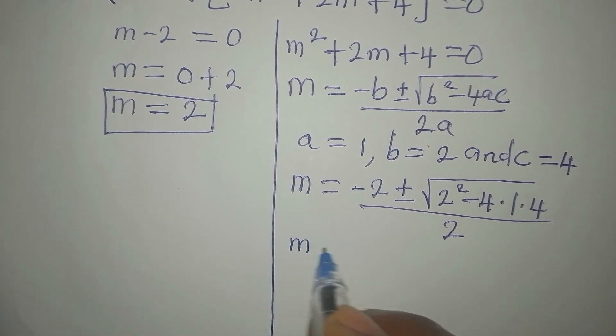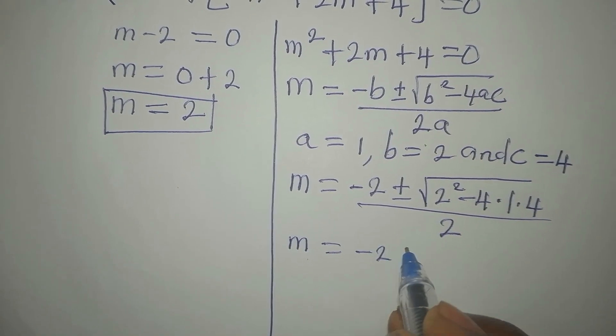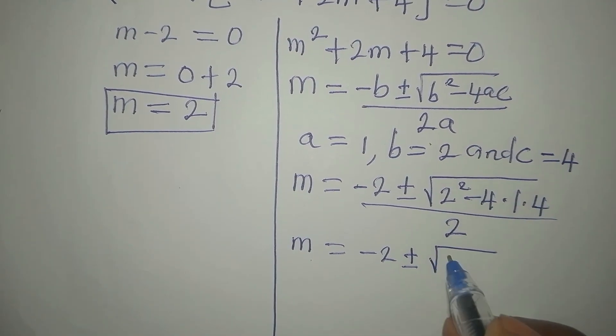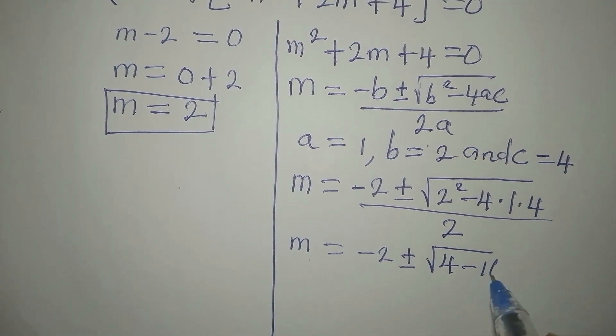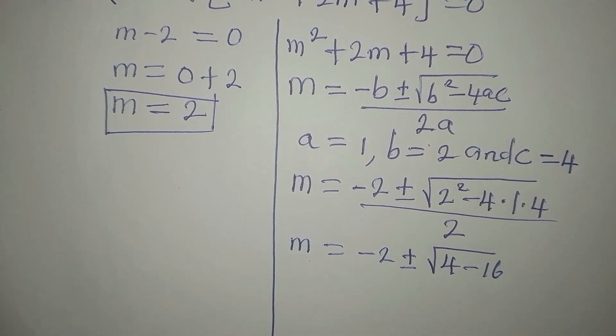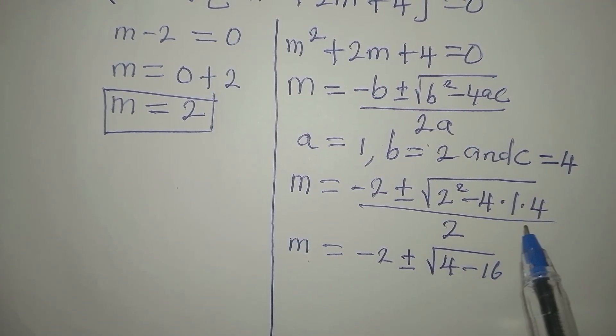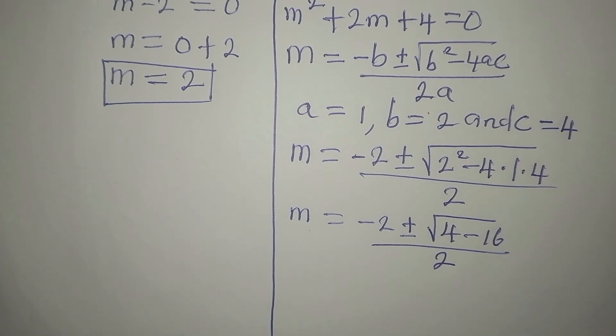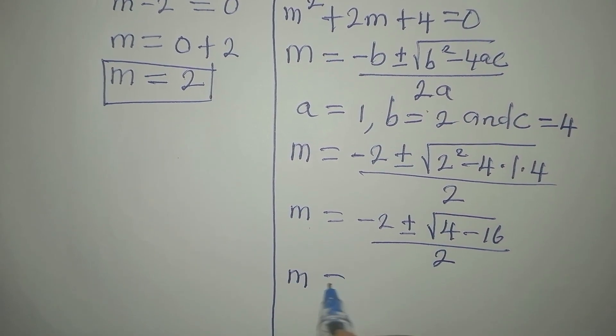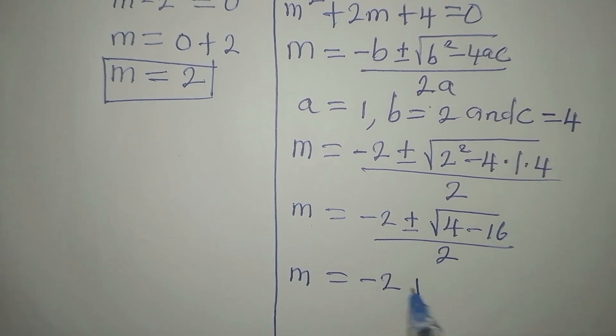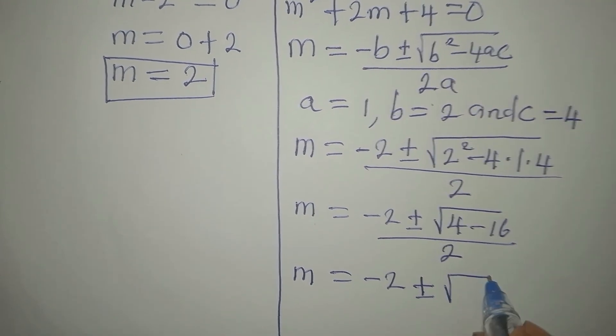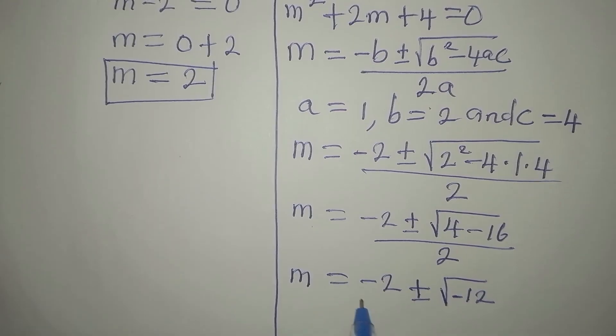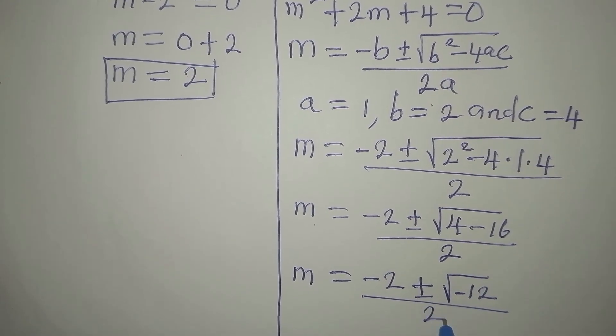So that our m will now be minus 2, plus or minus, square root of 4 minus 16. Because 2 squared is 4, 4 times 1 times 4 is 16. Then we divide by 2. If we continue, our m will be minus 2, plus or minus, square root of 4 minus 16 is minus 12. So we have this over 2.